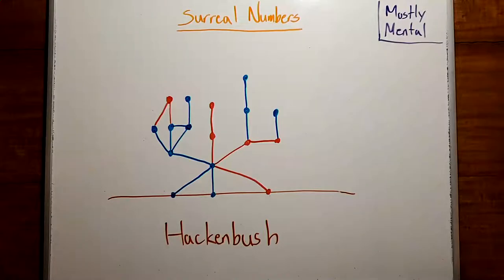In the last few videos, we looked at the nimbers, a number system that fell out of playing impartial games. But as we'll see, if we look at a different kind of game, we'll discover an entirely separate number system known as the Surreals.